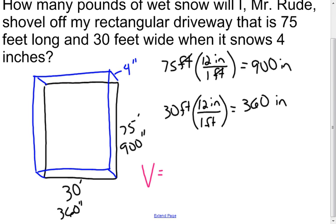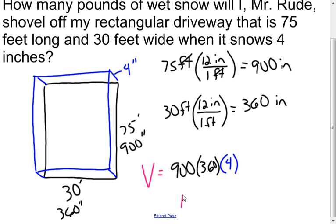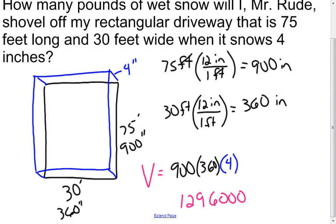Now I have enough information to figure out how much wet snow is on my driveway. Using the volume formula — area of the base — my base is 900 inches by 360 inches, and then I multiply by the height, which is the snow depth of 4 inches. Multiplying everything together, I find the volume of the wet snow sitting on top of my driveway is 1,296,000 cubic inches.